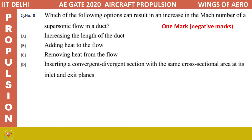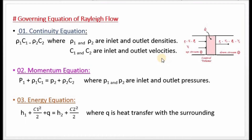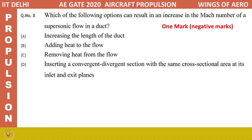The next question: which of the following options can result in an increase in the Mach number of a supersonic flow in a duct? Options include increasing duct length, adding heat, removing heat, or inserting a convergent-divergent section. Based on Rayleigh flow and Fanno flow mechanisms, we can increase the Mach number of a supersonic flow in a duct by removing heat from the flow.